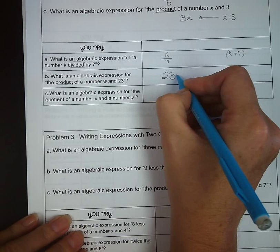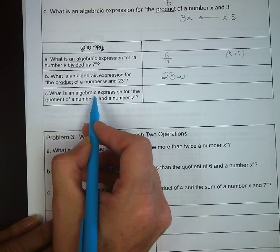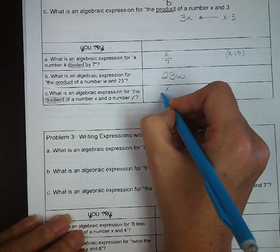Next up, what is an algebraic expression for the quotient of a number x and a number y? So quotient is division x over y.